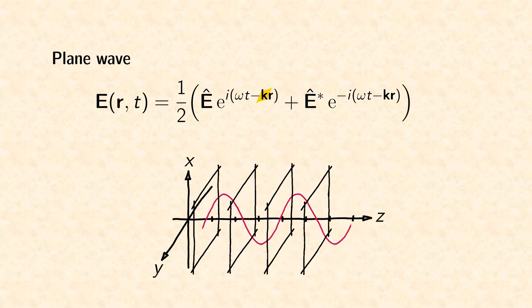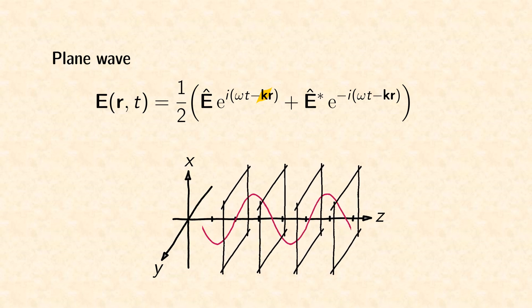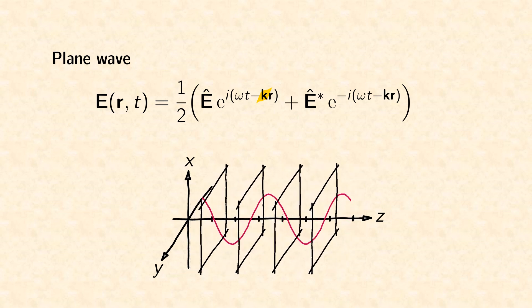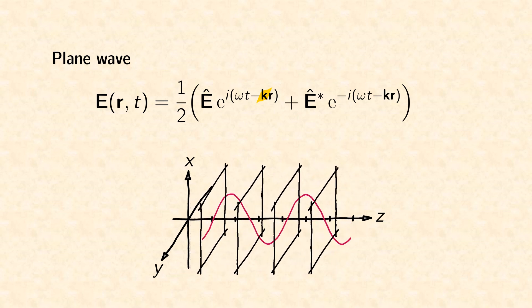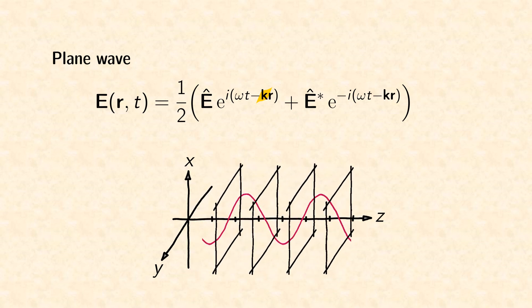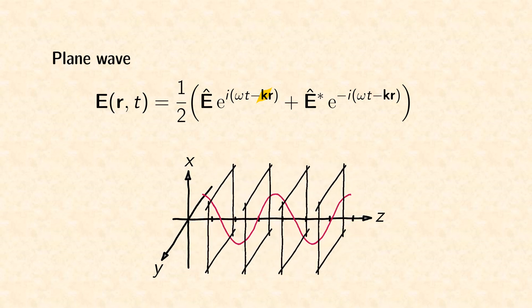The wave vector k defines the direction of the wave propagation and its magnitude is equal to the wave number k mentioned before. You can easily prove this equality when you insert the definition of the plane wave into the Helmholtz equation.